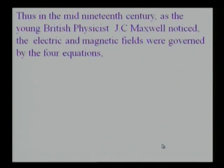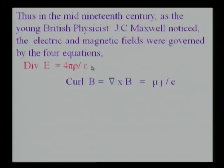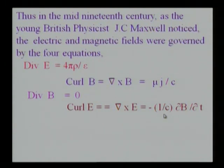In the mid-19th century, we had four sets of equations representing the electric and magnetic fields. They were all different. The British physicist J.C. Maxwell noticed this when he wrote them all down together. The divergence of E is 4π rho upon epsilon, curl of B is mu J upon C, divergence of B is zero, and curl of E is minus 1 upon C, delta B by delta T. What the young Maxwell was wondering about was, if electricity can produce magnetism and magnetism can produce electricity, why in their mathematical descriptions there is no symmetry?